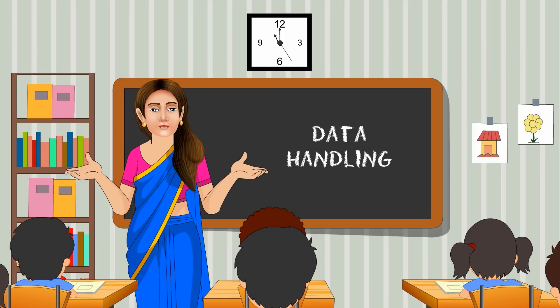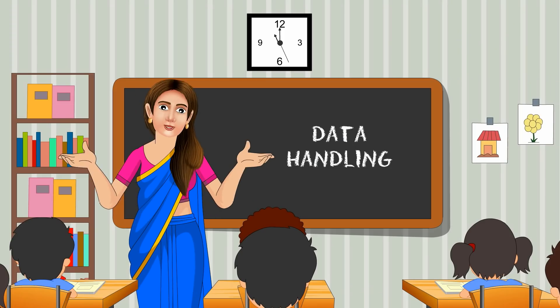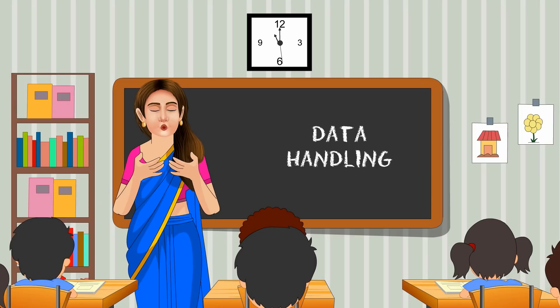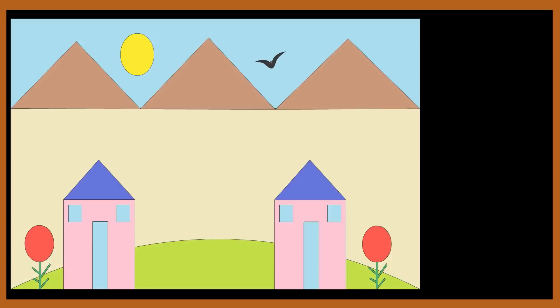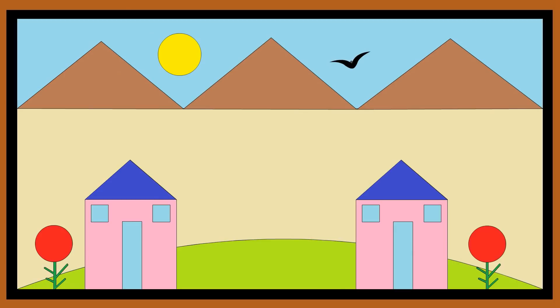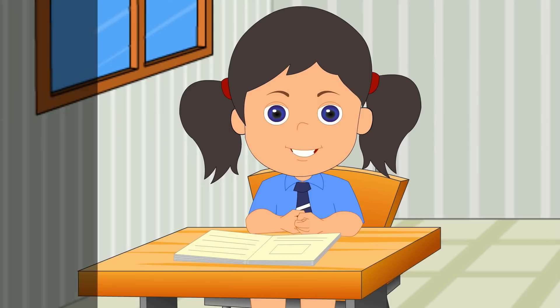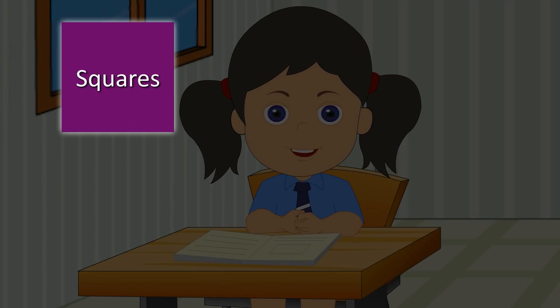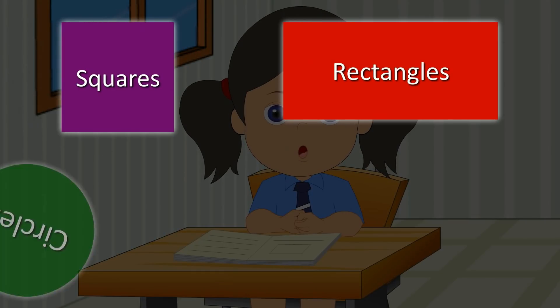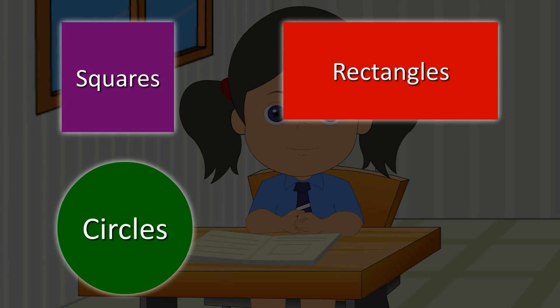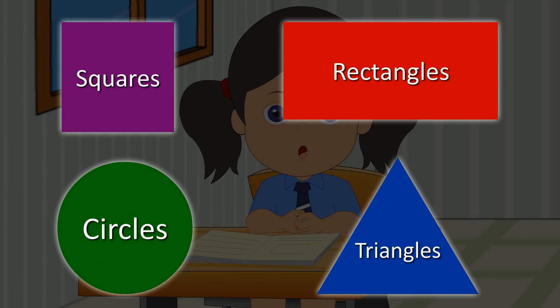Children, now look at this picture carefully. Can you identify the simple shapes in it? Yes, madam. It has some squares, rectangles, circles and triangles in it.